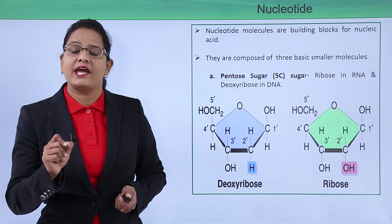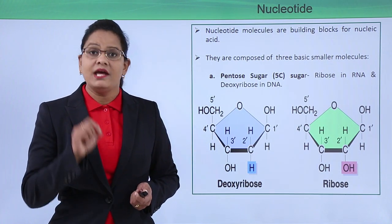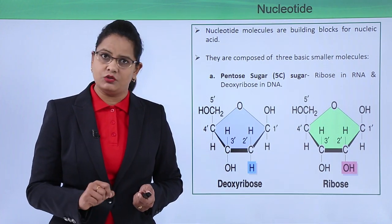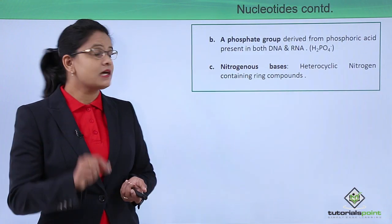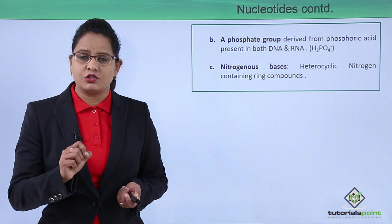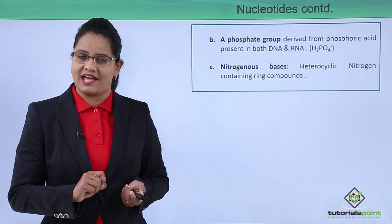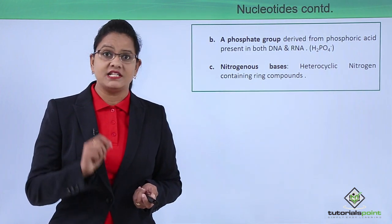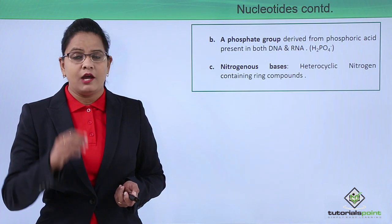The next component present in the nucleotide is a phosphate group. So the phosphate group, PO4^2-, comes from the phosphoric acid.